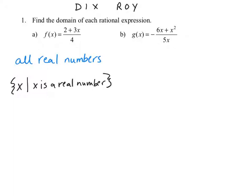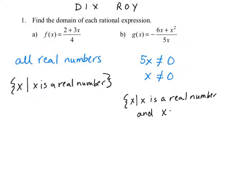In example b, g of x equals negative the quantity 6x plus x squared in the numerator over 5x in the denominator. We need to find the x values that make the denominator zero. Since the denominator is 5x, we set 5x cannot equal zero, meaning x cannot equal zero. So the domain is all real numbers except zero, written in set notation as x such that x is a real number and x cannot equal zero.